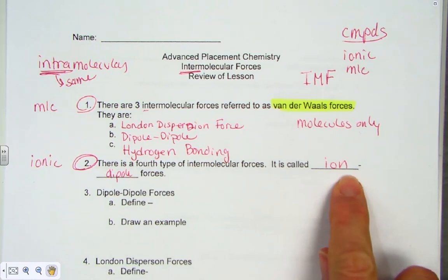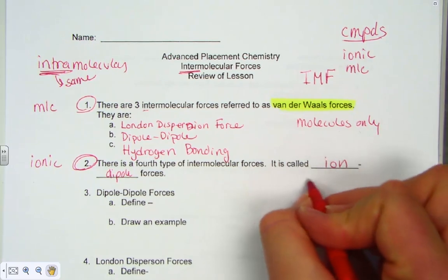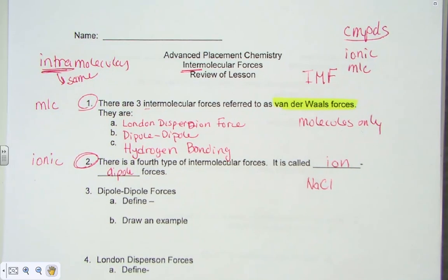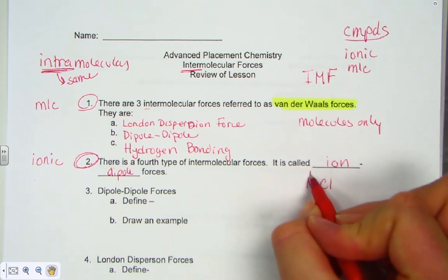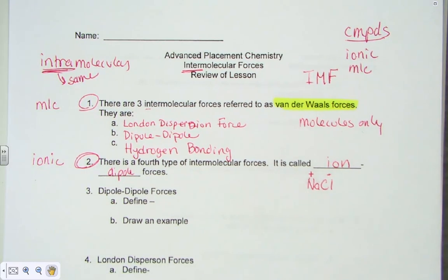The word ion refers to a charged atom — ions come in two categories: cations (positive) or anions (negative). An ionic compound like table salt, NaCl — metal to nonmetal — is built of positive and negative ions. A positive is a cation; a negative is an anion.